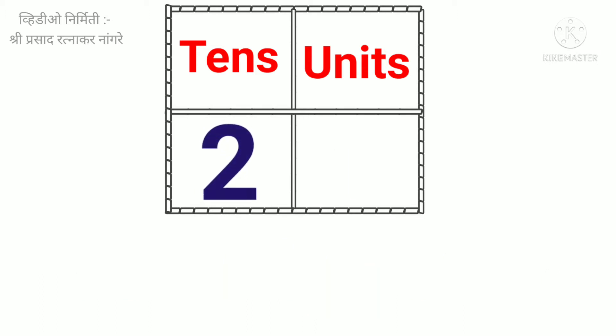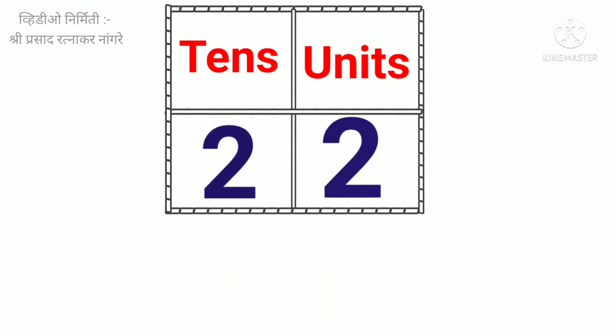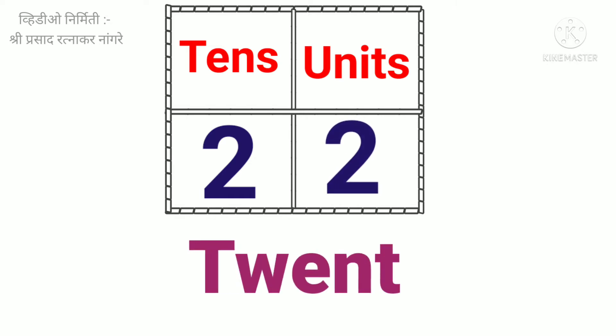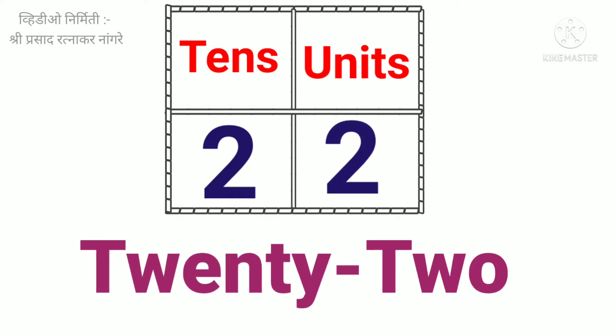Two tens. Two units. Twenty-two. T-W-E-N-T-Y-T-W-O. Twenty-two.